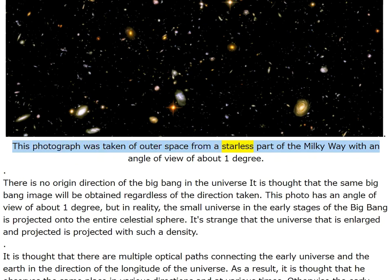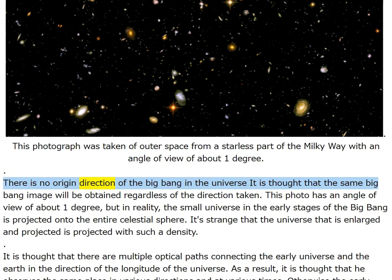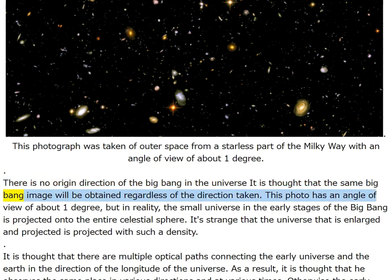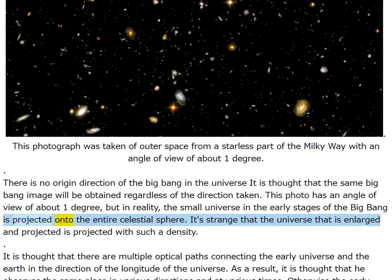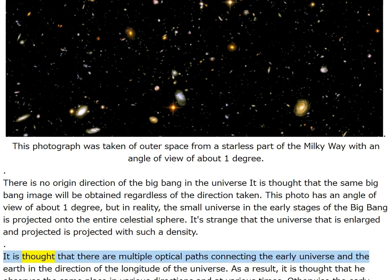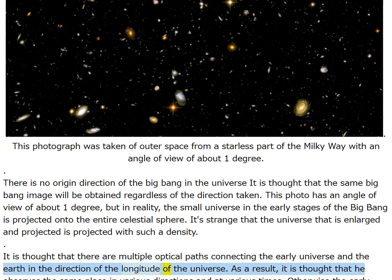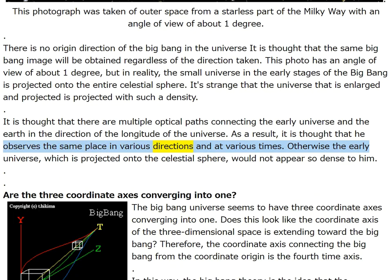This photograph was taken of outer space from a starless part of the Milky Way with an angle of view of about one degree. There is no origin direction of the big bang in the universe; the same big bang image will be obtained regardless of direction. In reality the small early universe is projected onto the entire celestial sphere. It is thought that there are multiple optical paths connecting the early universe and the Earth in the direction of the longitude of the universe, so he observes the same place in various directions and at various times.